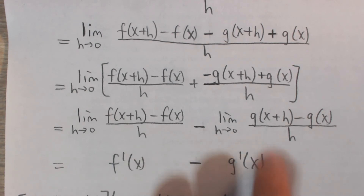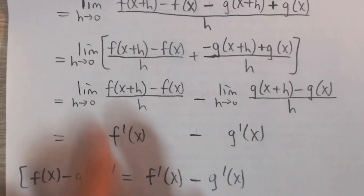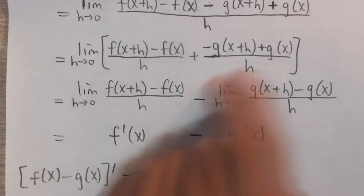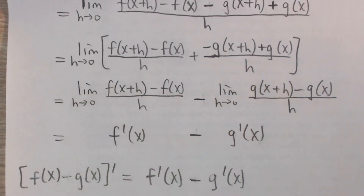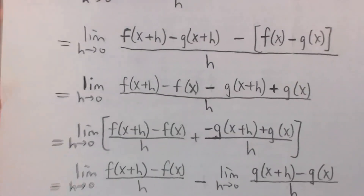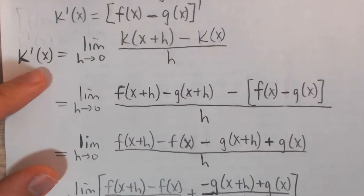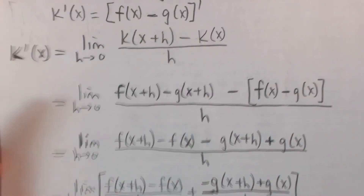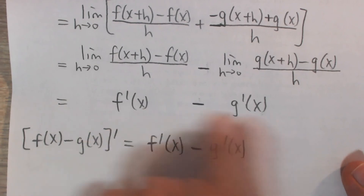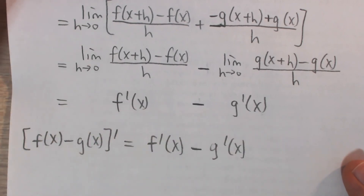Now on the left we have the derivative of f, and on the right we have the derivative of g with a negative sign in front. So the derivative of k of x is the difference of the derivatives of f and g — the derivative of a difference is the difference of the derivatives.